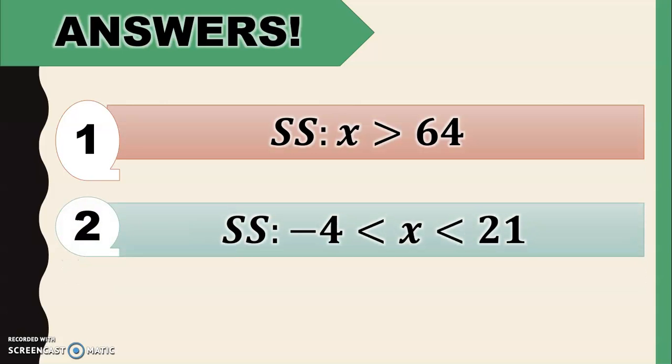And for number 2, the answer is the values of x are between negative 4 and 21. Or negative 4 is less than x, less than 21.